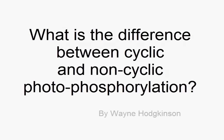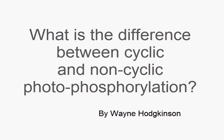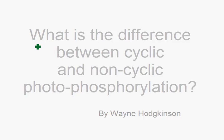What is the difference between cyclic and non-cyclic photophosphorylation? Well, cyclic photophosphorylation is the normal situation. It's where plants make their ATP and their NADPH that is needed for photosynthesis.